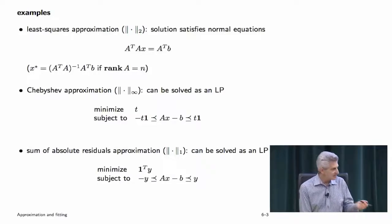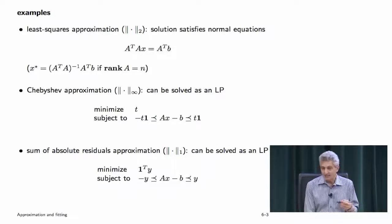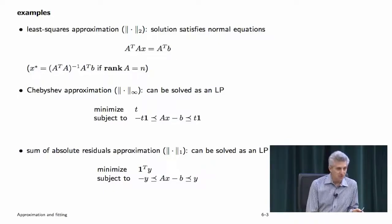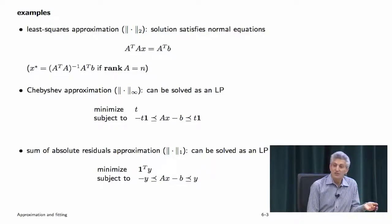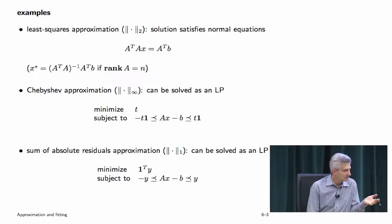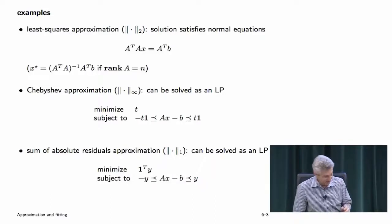Now let's instantiate some specific examples. If you take the two-norm, you get least squares, and that has an analytical solution. If A is full rank, it's just A-transpose-A inverse A-transpose-b — your least squares solution. This problem has lots of names: it's called regression in statistics, or least squares fitting everywhere else.